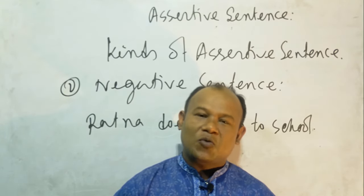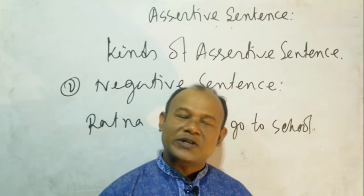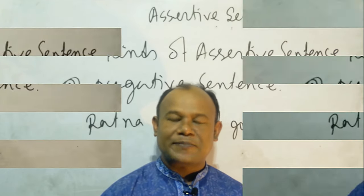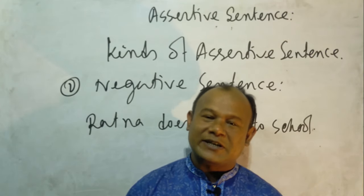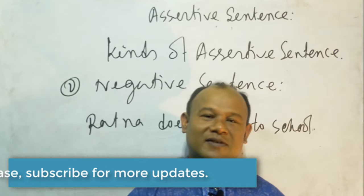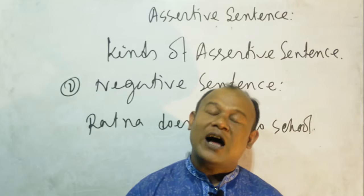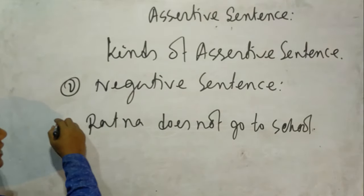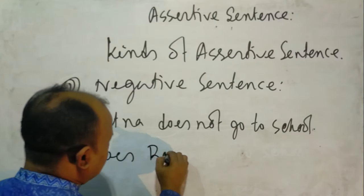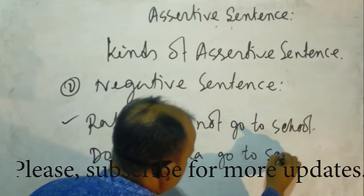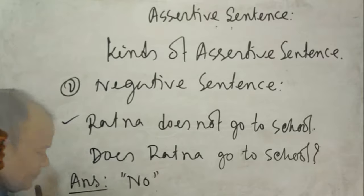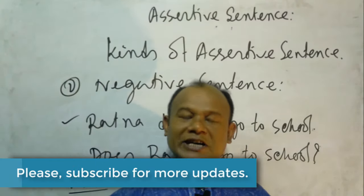Now we will learn negative sentence. What is called a negative sentence? The sentence which denies or negates a statement, feeling, opinion, or anything else is called a negative sentence — for example: Ratna does not go to school. In another way, centralizing an assertive sentence, if we ask a question started with a helping verb and get the answer no, that sentence is called a negative sentence. For Ratna does not go to school, the answer to the question is no, so it is a negative sentence.